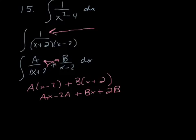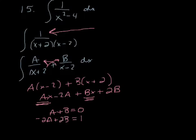I had 0 x's and my constant was 1. So when I combined my Ax and my Bx, I got 0 x is for an answer, so A plus B equals 0. And negative 2A plus 2B would equal 1, because that's my constant that I have.